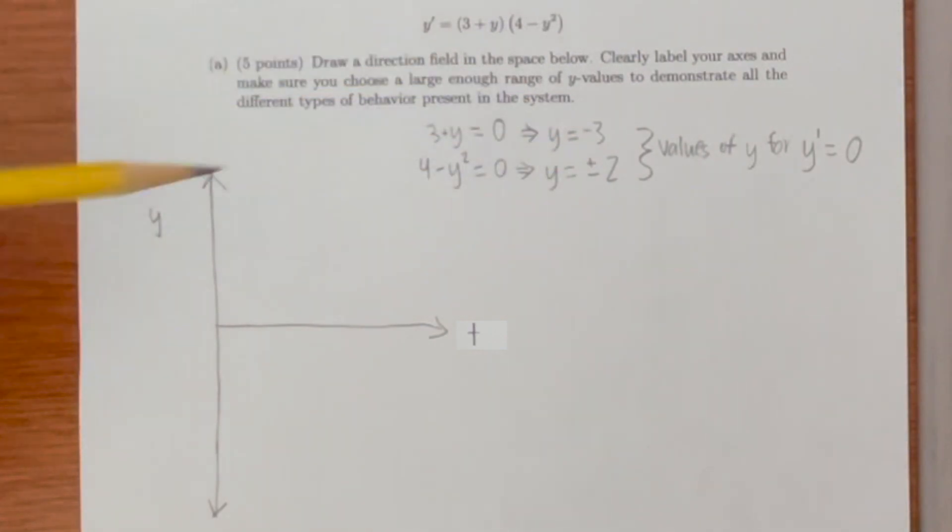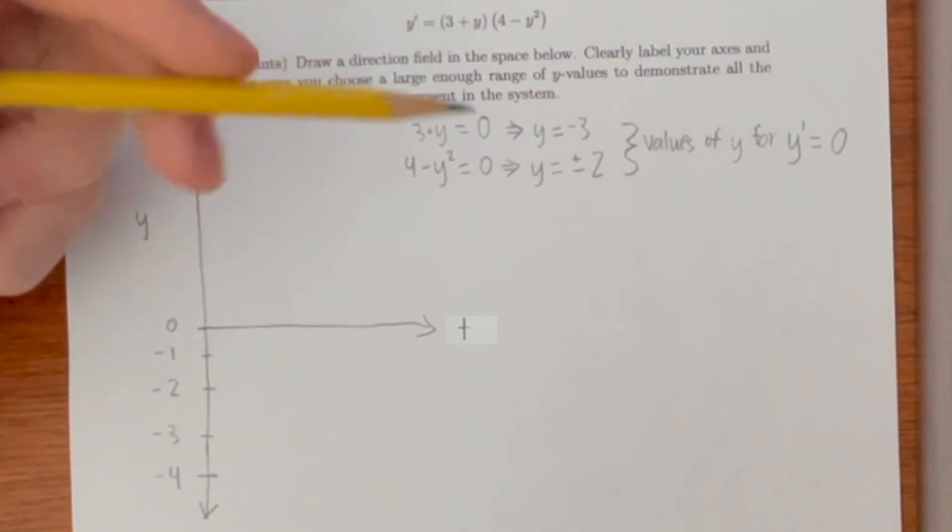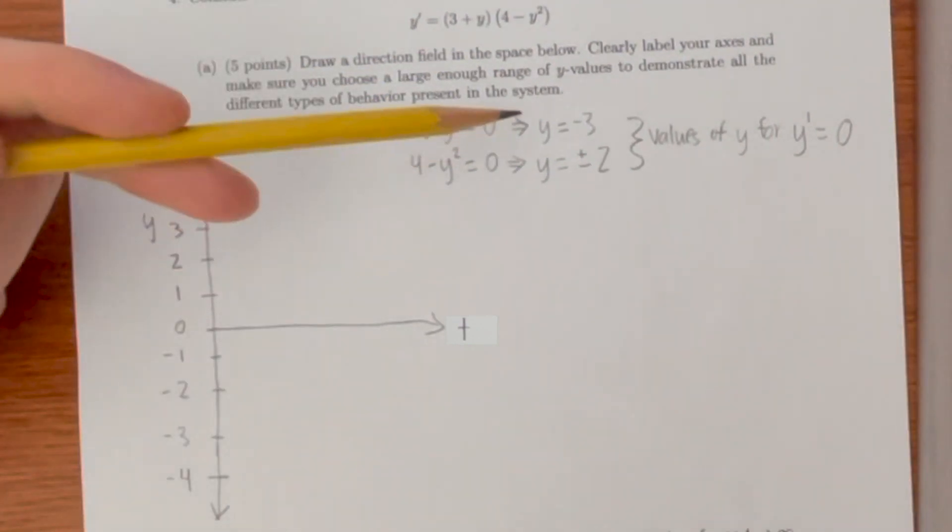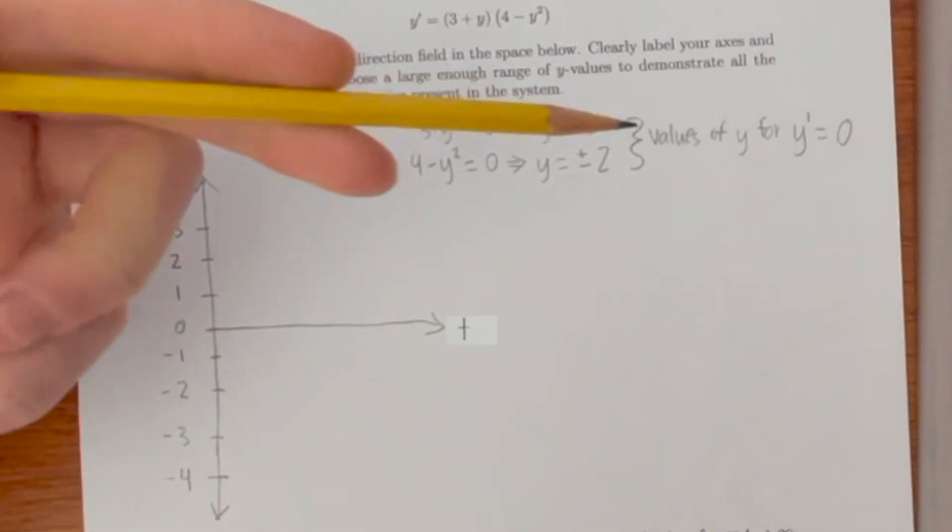The lowest one I have is negative 3 so I'm going to have my y go down to negative 4. The highest y value I have is 2 so I'm going to make my y go up to 3. Now at the y values for which y prime is equal to 0 we draw horizontal ticks because the slope y prime is equal to 0.